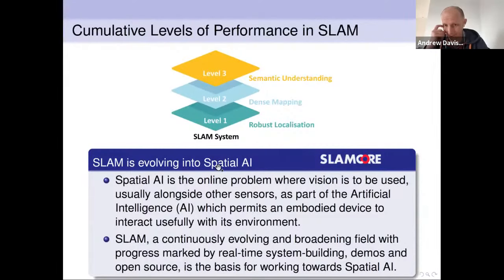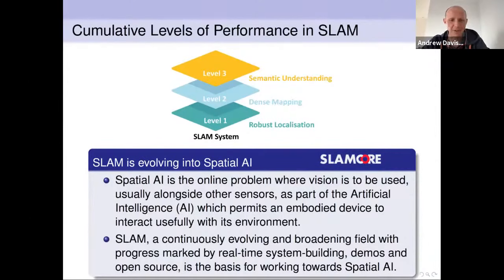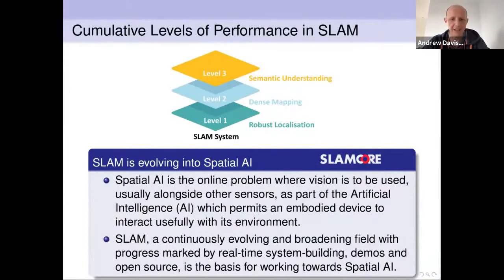Recently I've been using the term Spatial AI, and for me this isn't really a new thing — it's not a layer you build on top of SLAM. To me, it's what SLAM has always been about and has gradually been evolving towards. I still think of something as a SLAM system even if it's doing dense mapping and semantic understanding. But the term Spatial AI maybe just makes clearer what the ambition is here: a general important part of the artificial intelligence of an embodied device, which is all about understanding the scene around it in a useful way.